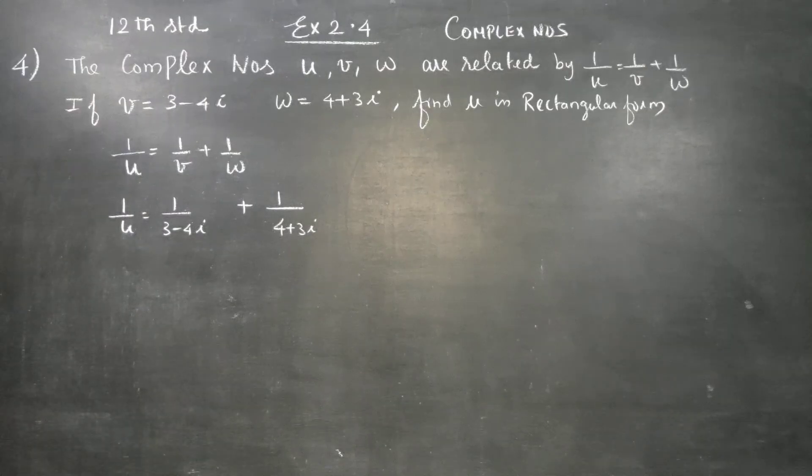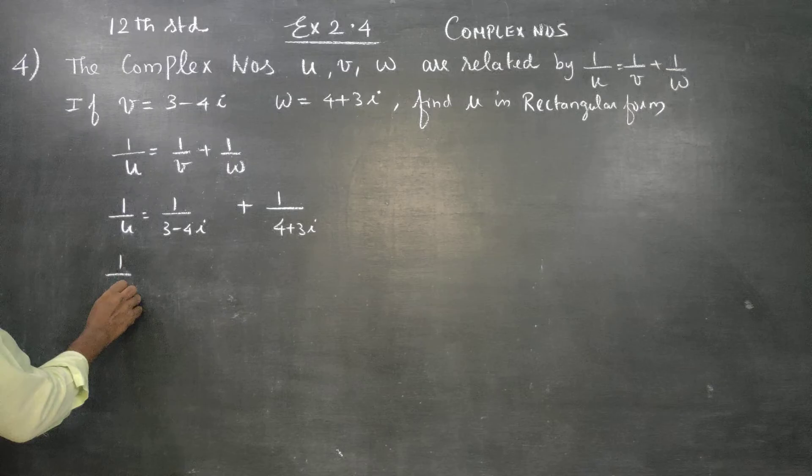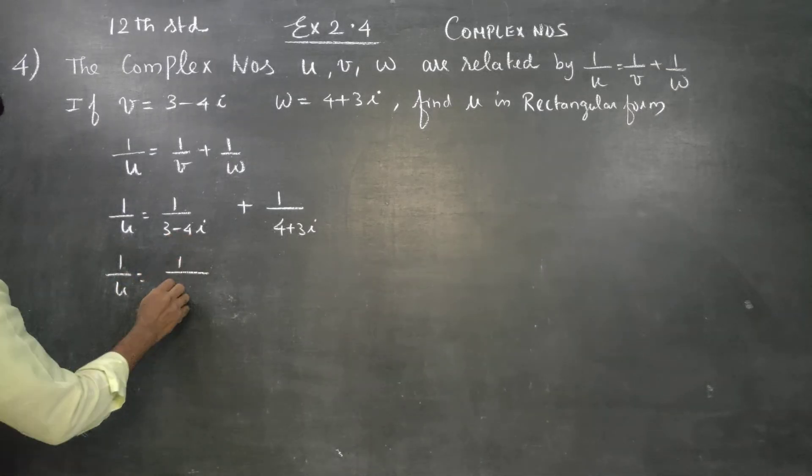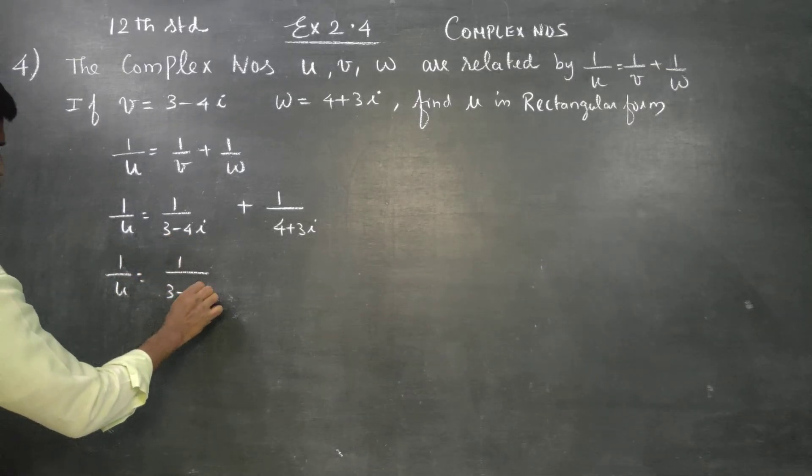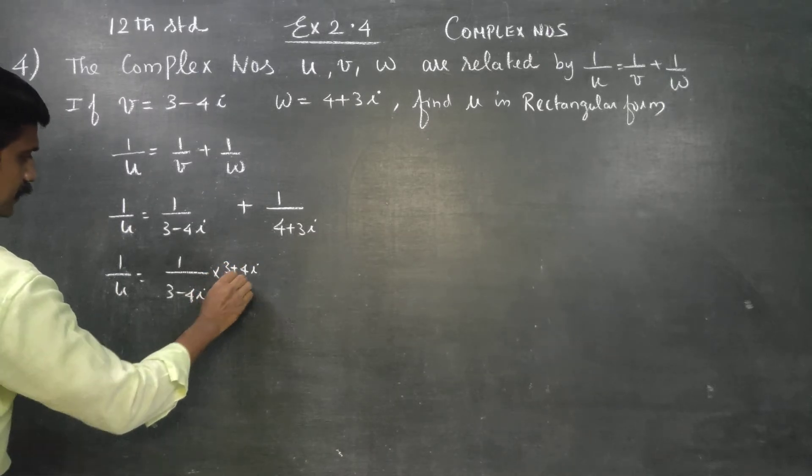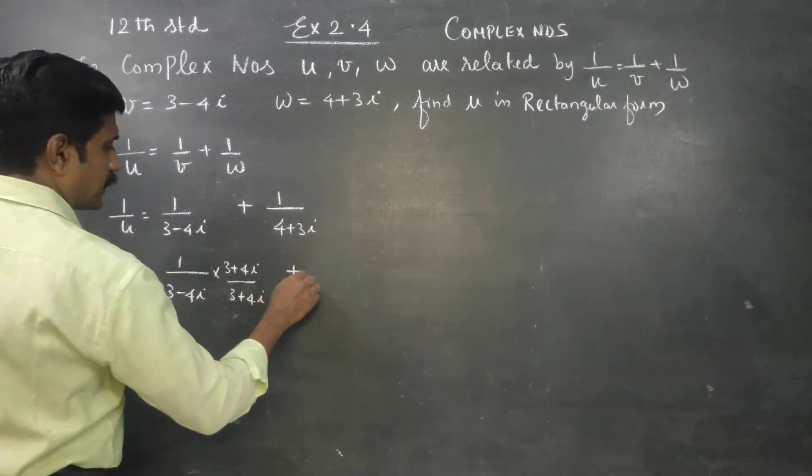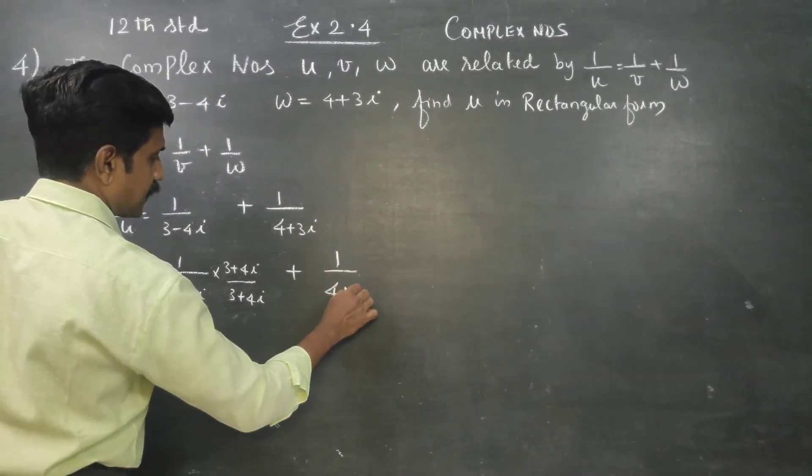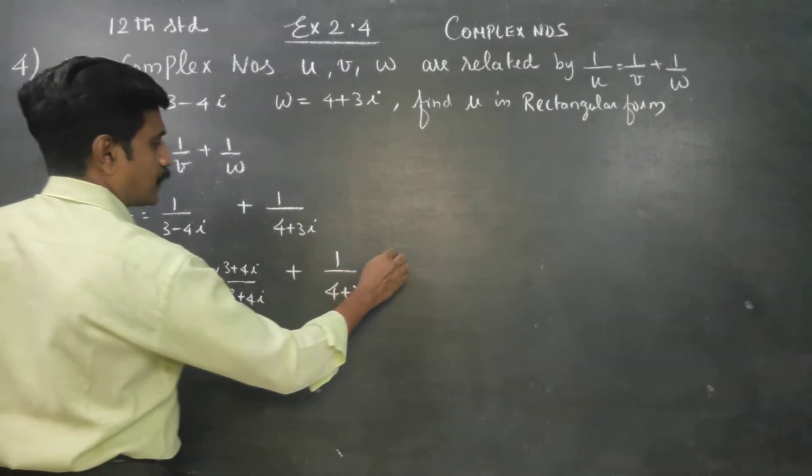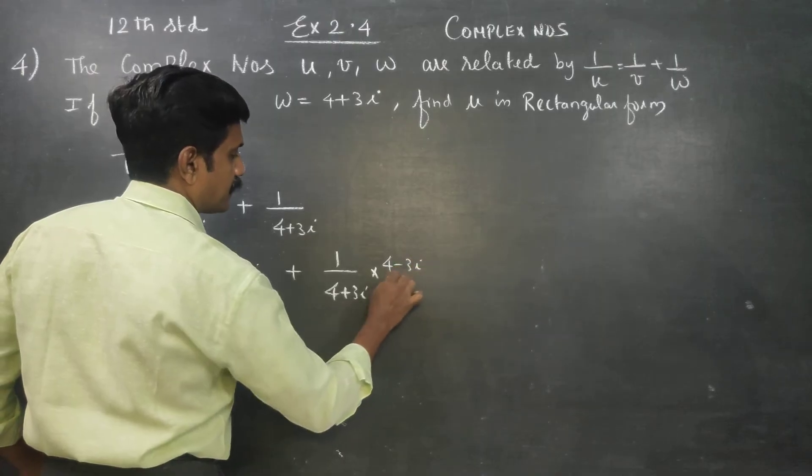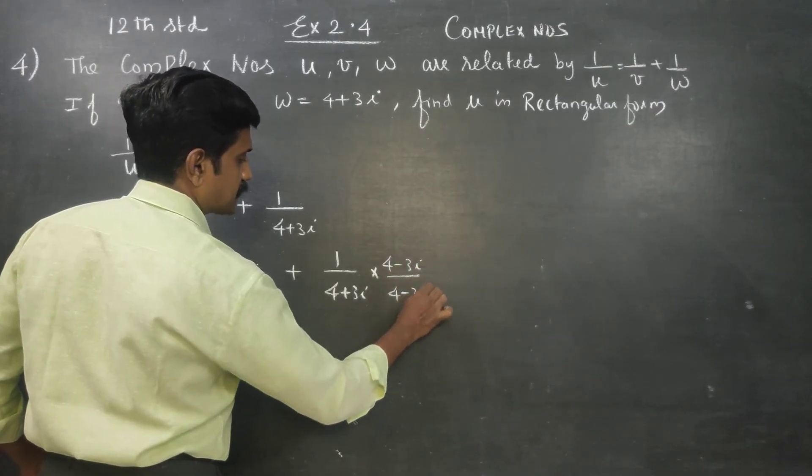This is stage number 1. Now, after this, 1/u is equal to, multiply by conjugate, 3 plus 4i by 3 plus 4i, plus 4 minus 3i by 4 minus 3i.